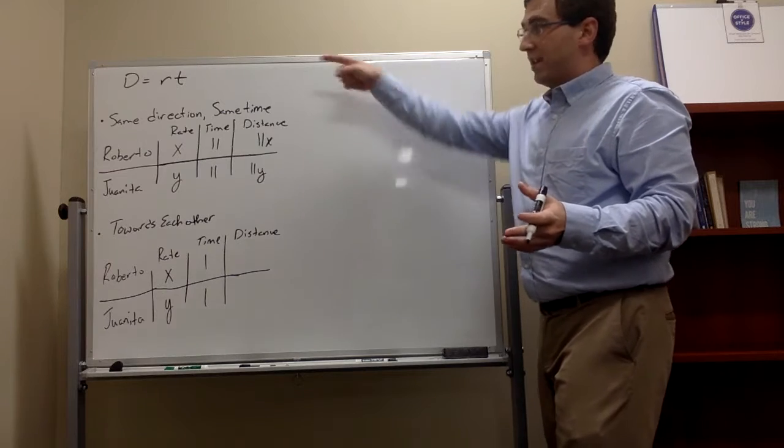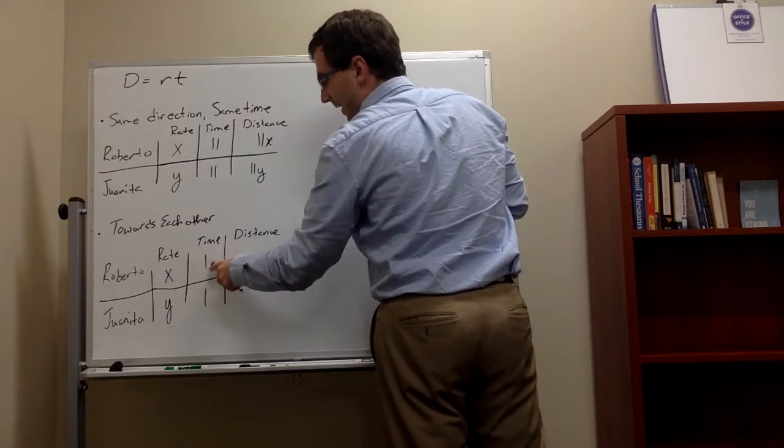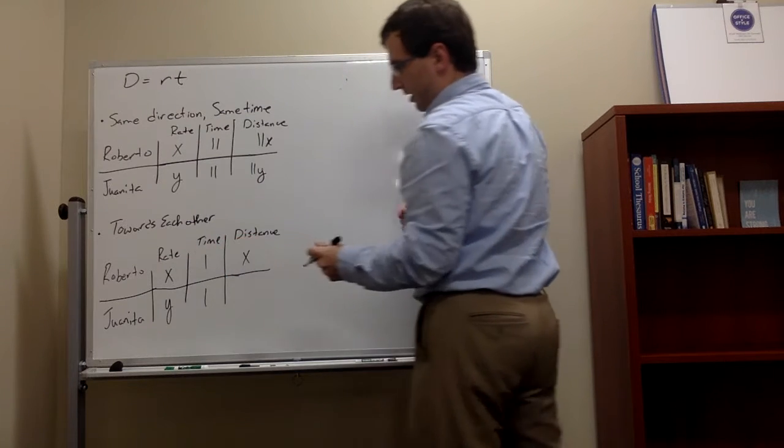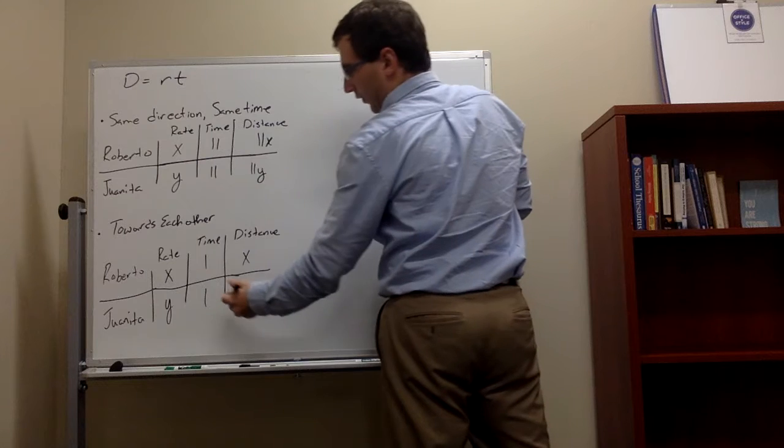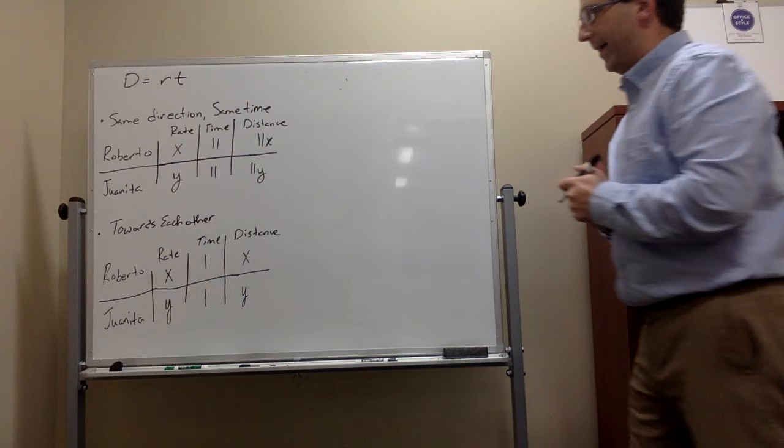Now, the distance, just like we did on the first one, rate times time. So it would be x times 1, which would just be x, or 1x if you want to be more specific. And also for Juanita, y times 1, or just y.